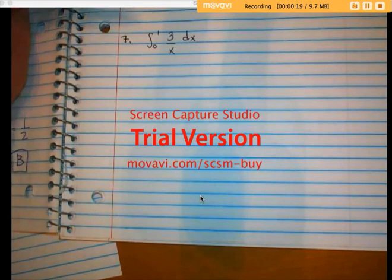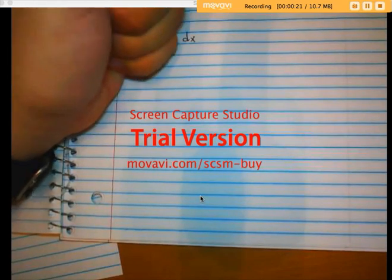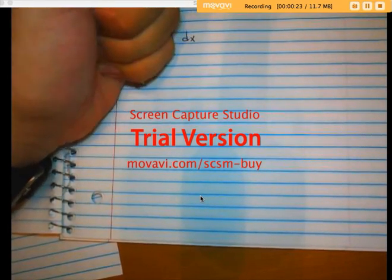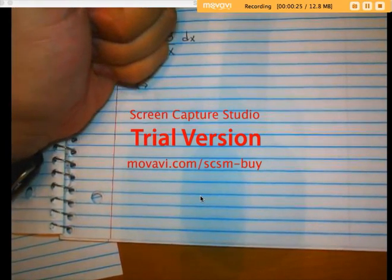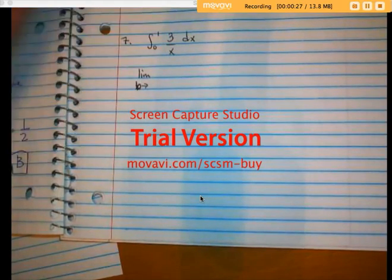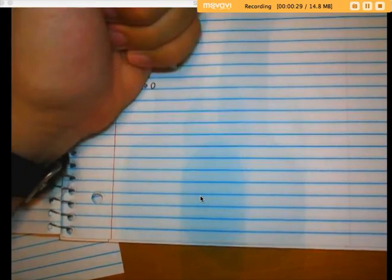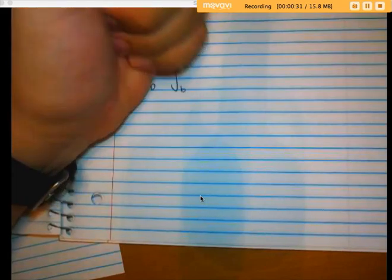...zero into that, we have a problem. So what do I have to do? I have to take the limit as x approaches—I should call that b—as b approaches zero of the integral from b to 1...